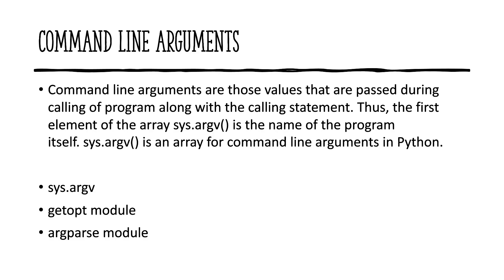How we pass those arguments during runtime is what we call command line arguments. In this first method we'll discuss how to pass arguments using sys.argv. The first element of the array sys.argv is the name of the program itself — index zero is the program name, and actual arguments start from index one. sys.argv is an array for command line arguments in Python, more like a list operation.